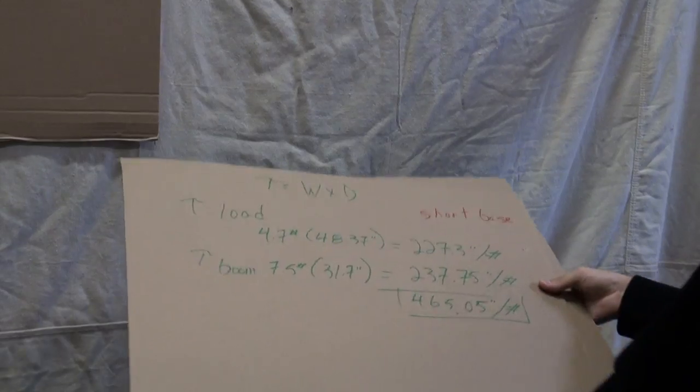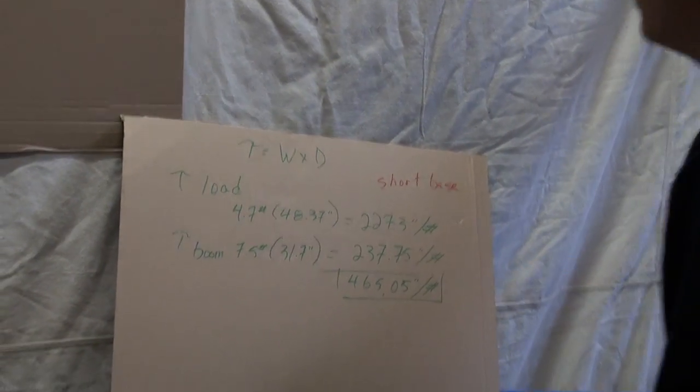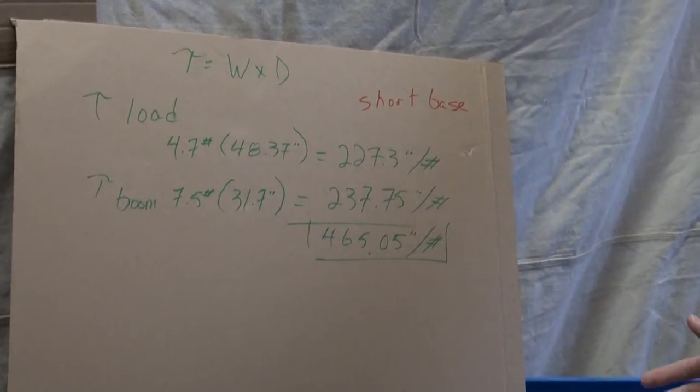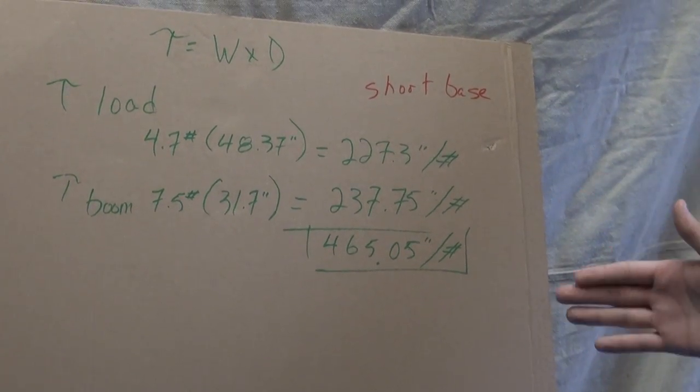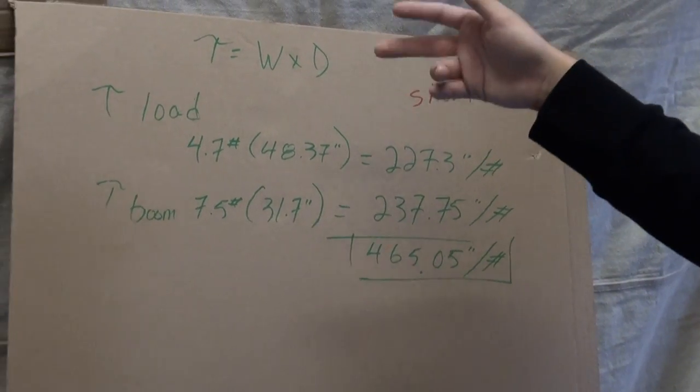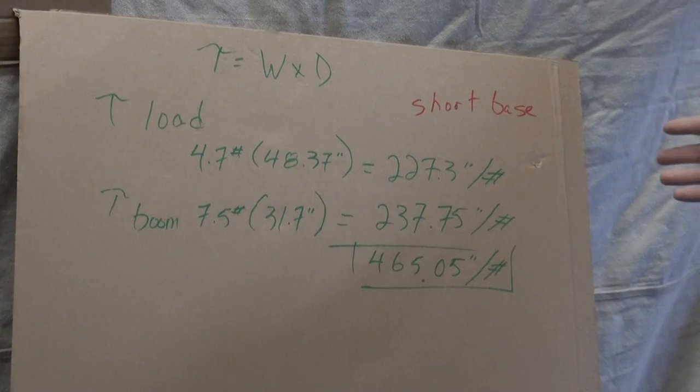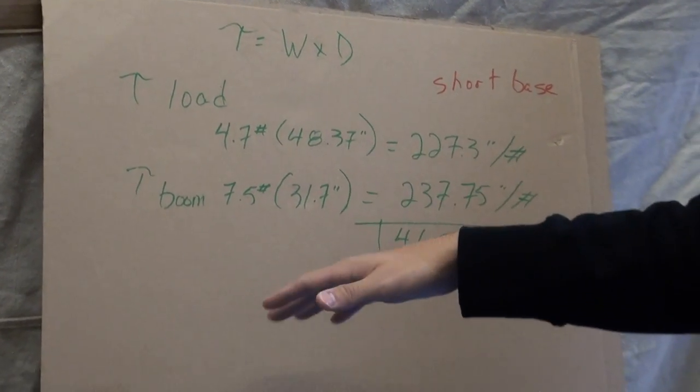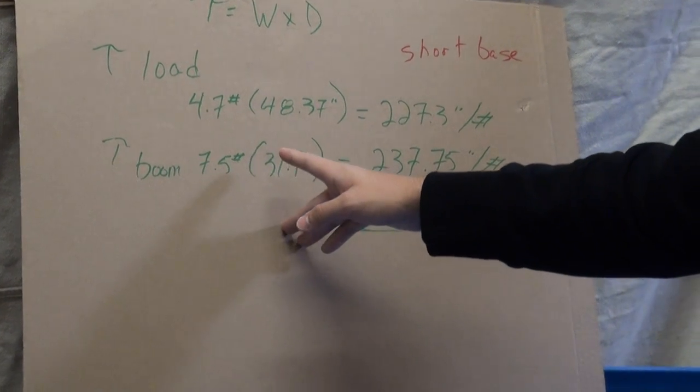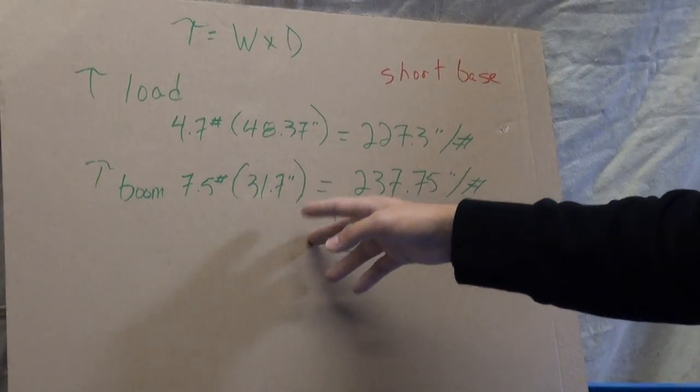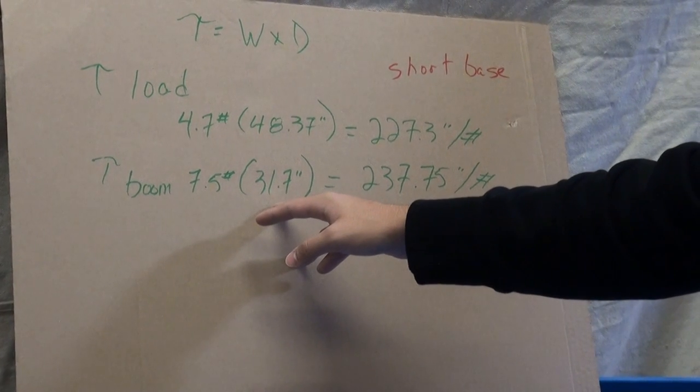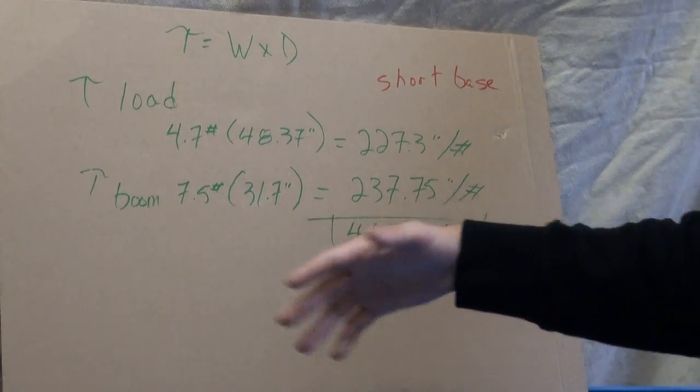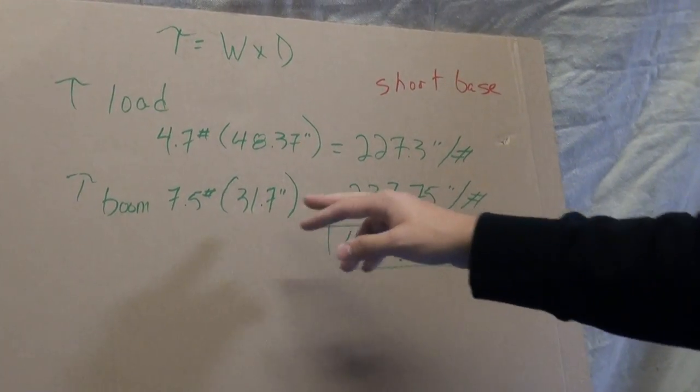And now we want to calculate the torque for the load and the boom side, and this time, because it's 6 inches of difference, instead of just adding 2 inches to our 42 inches distance, now we have to add 6. So instead of 42 inches, now it's a distance of 48.37. And instead of just 25 inches for the boom, now it's add 6 inches, 31.7.